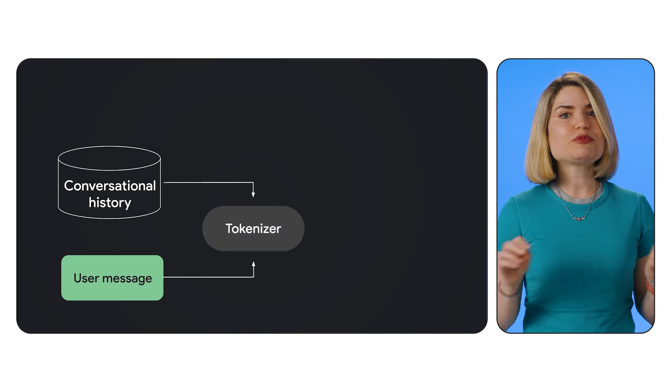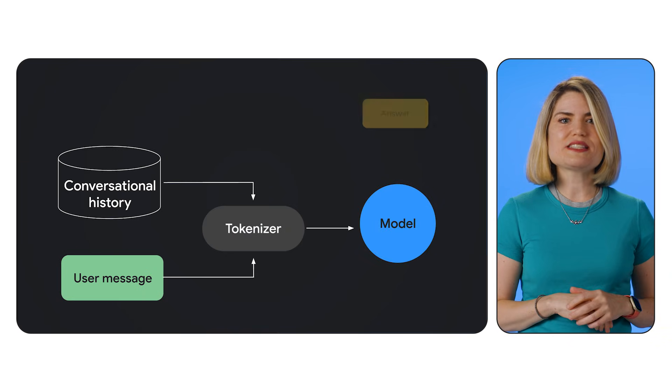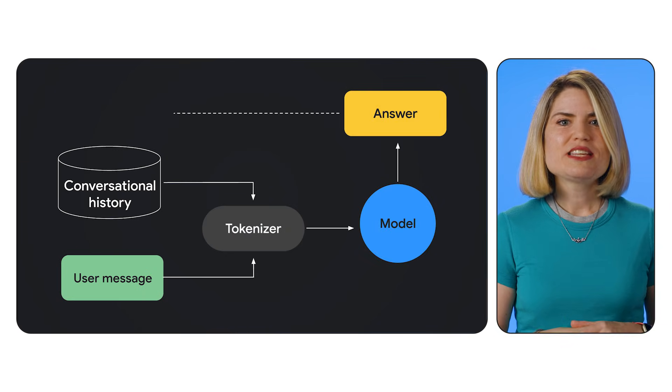While long context is incredibly powerful, processing millions of tokens can be computationally intensive. To address this, Gemini introduces a technique called context caching. Context caching allows the model to remember previously processed information.